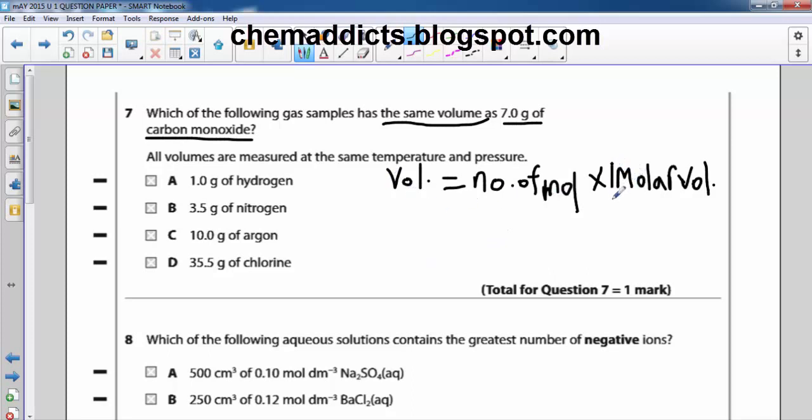Have you noticed that I have said molar volume, not 24 dm³? Typically, you have learned that the molar volume of gas is 24 dm³, but that's for RTP. At room temperature and pressure, the molar volume of gas is 24 dm³. But in this case, it is not 24 dm³, because the temperature is not stated here, and also a specified pressure is not stated here. It is just said that the same temperature and pressure. All volumes are measured at the same temperature and pressure. So we will not say the molar volume of gas here is 24 dm³.